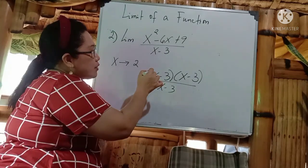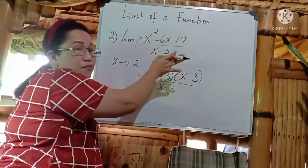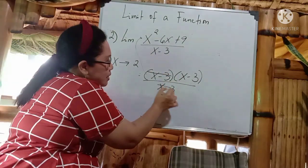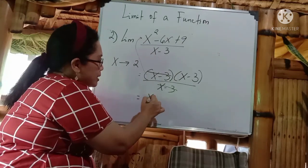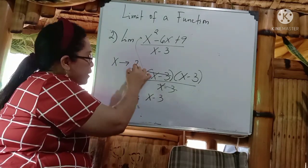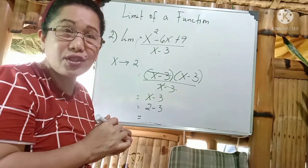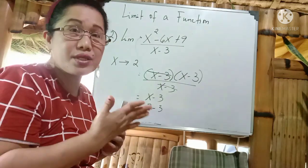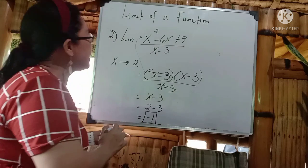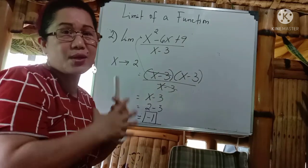As I mentioned, checking with the FOIL method confirms the factored form. Since it is a division, we use the cancellation method — (x minus 3) and (x minus 3) in the numerator and denominator cancel out, leaving x minus 3. Since x approaches 2, we substitute: 2 minus 3. Applying integer subtraction — unlike signs, subtract and copy the sign of the bigger number — 2 minus 3 gives negative 1. Therefore, the limit of x squared minus 6x plus 9 over x minus 3 when x approaches 2 is equal to negative 1.